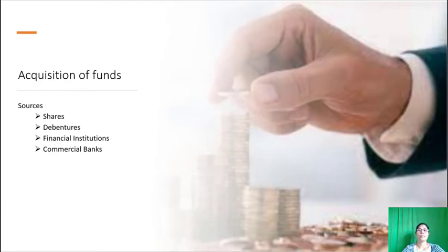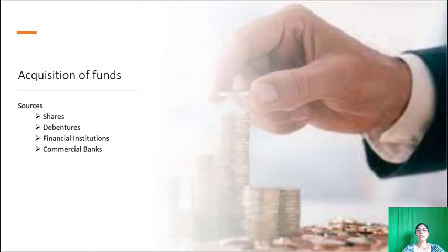Acquisition of funds: There are different sources available for supplying funds. These sources may be shares, debentures, amounts from financial institutions, and borrowings from commercial banks. The selection of the appropriate source is a difficult task. Choosing a wrong source of funds may create difficulties at a later stage. The pros and cons, problems, and benefits of various sources should be analyzed before making the final decision of acquiring funds from the right source.